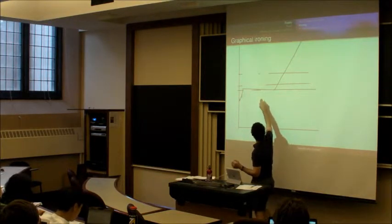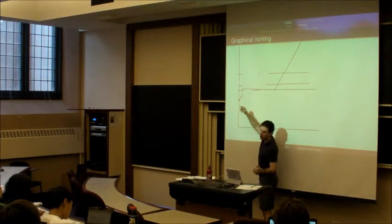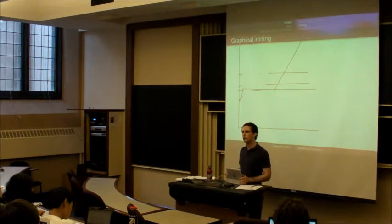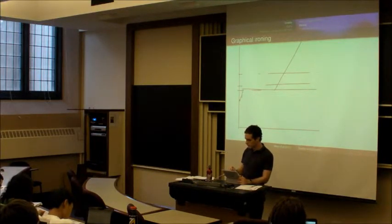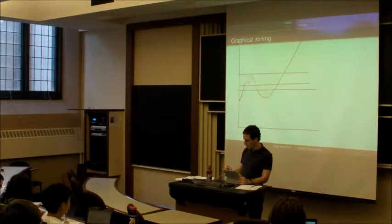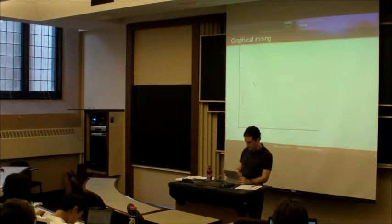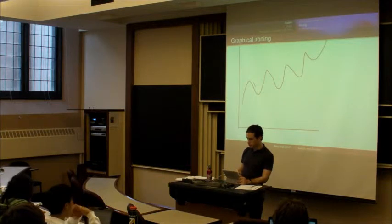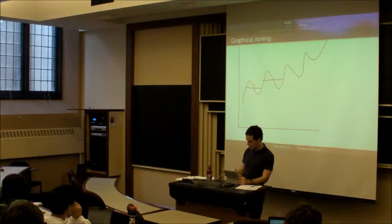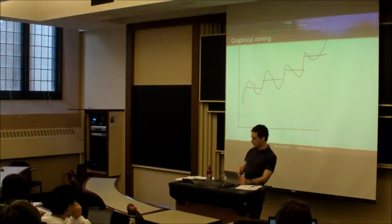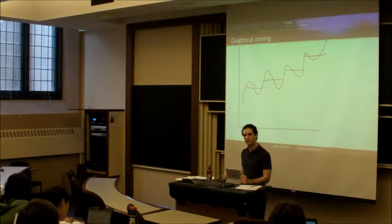So anytime you have a non-monotone marginal cost curve, you can always create a monotone marginal cost curve using this ironing procedure. And that's true even if there are multiple times where the curve goes up and down. So the curve could even be like that. What you would do is just every time it turned down, you would iron it like that, like that, like that, and like that. And you'd have this curve that's sort of wavy in parts and then has these flat parts as well. And that gives you a monotone increasing marginal cost curve.